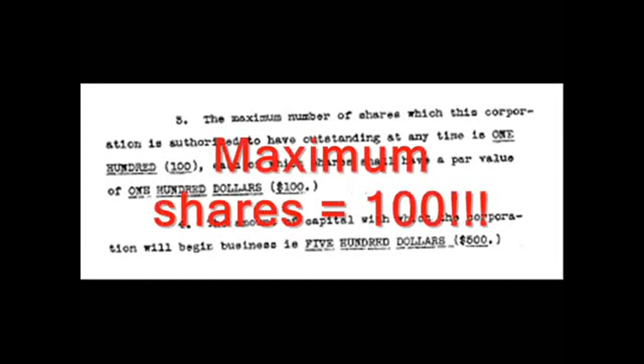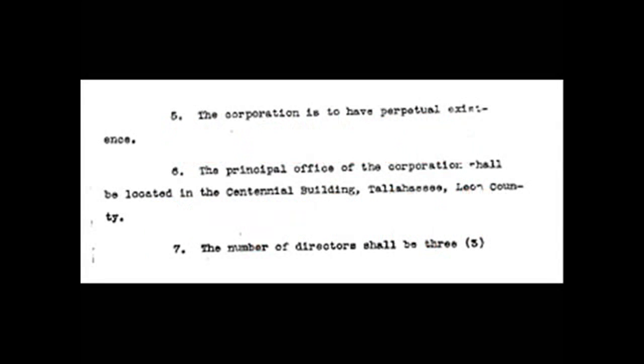Number 3: The maximum number of shares which this corporation is authorized to have outstanding at any one time is 100, each of which shares shall have a par value of $100. Number 4: The amount of capital with which the corporation will begin business is $500. Number 5: The corporation is to have perpetual existence. Number 6: The principal office of the corporation shall be located in the Centennial Building, Tallahassee, Leon County. Number 7: The number of directors shall be 3. Number 8: The names of the directors who shall hold office for the first year of the corporation's existence, or until their successors are elected and have qualified, and their post office addresses are as follows.